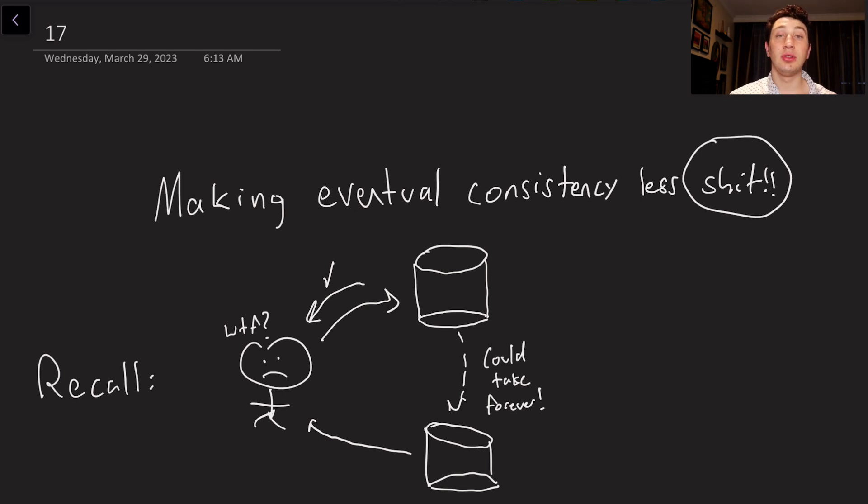So if you recall from last episode, we often are going to be doing things that are eventually consistent. The reason for this being that strong consistency, while nice, is too big of a price to pay. If I make a write, I don't want to have to wait for that write to go to every single database in my system. I may have a database in the US, I may have a database in Europe, I may have one in Australia.